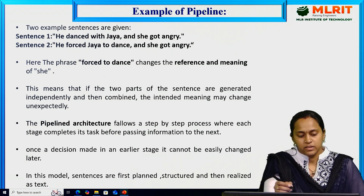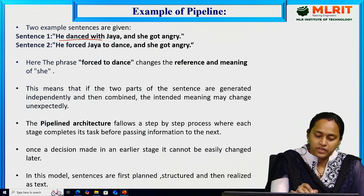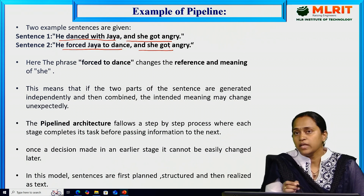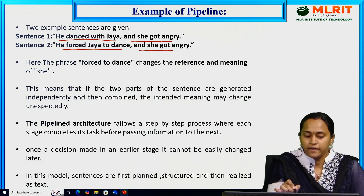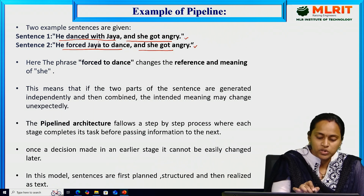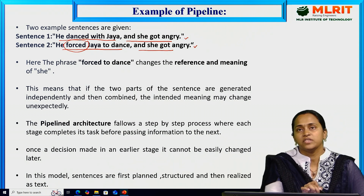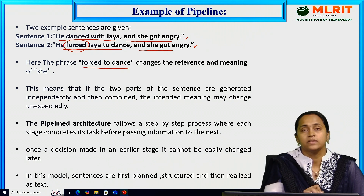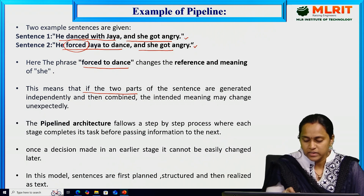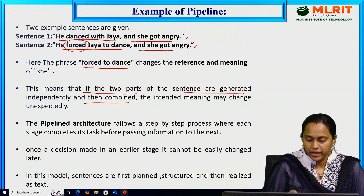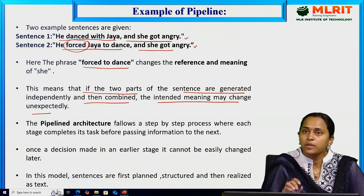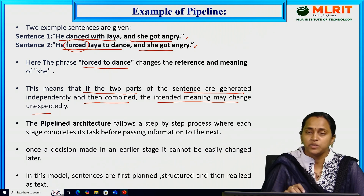Let us see an example of pipeline architecture. Consider two sentences: 'He danced with Jaya and she got angry' and 'He forced Jaya to dance and she got angry.' Both sentences represent the same meaning. 'Forced Jaya to dance' and 'danced with Jaya' are reference meanings — 'forced to dance' means Jaya is doing the dance. The two sentence parts are generated independently and then combined, so the intended meaning may change unexpectedly when combining them.